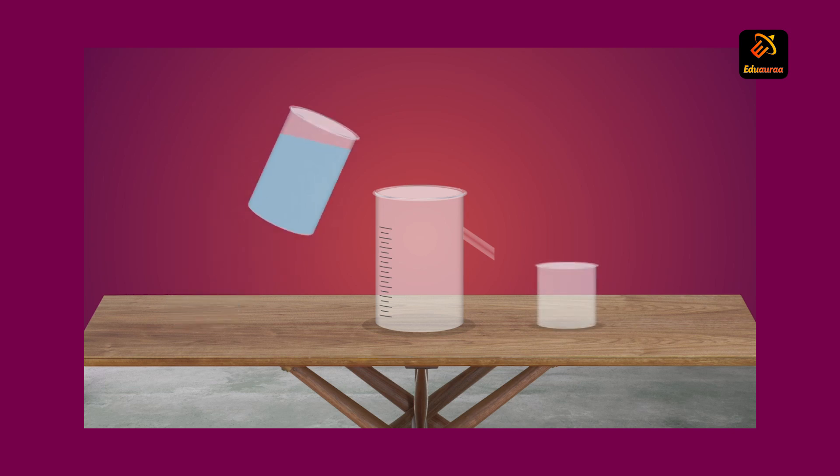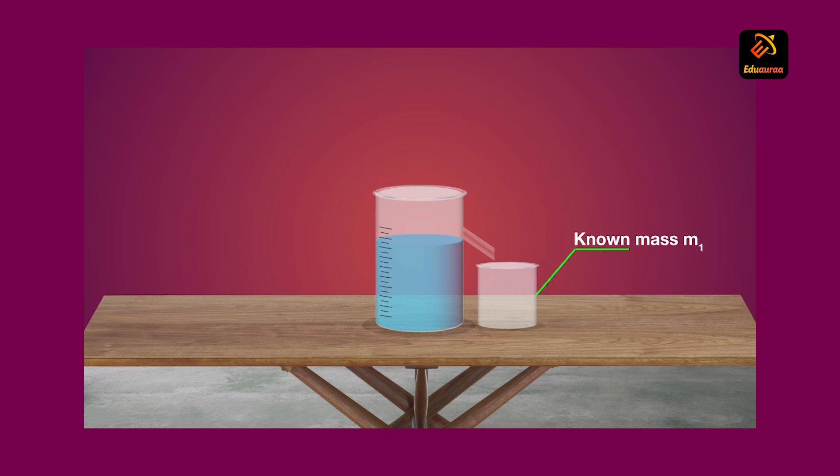Pour some water into the eureka can till the water reaches the top. When the water stops dripping, replace the beaker with another beaker of known mass.